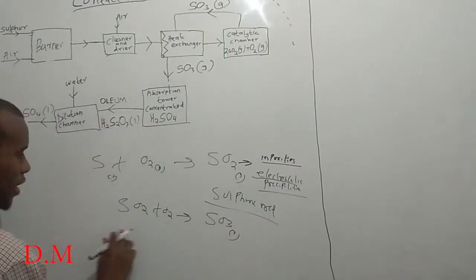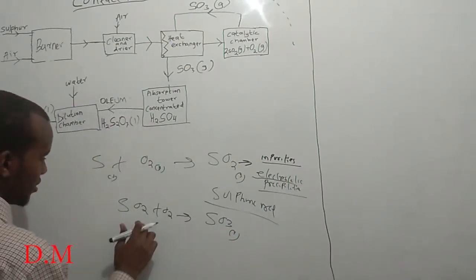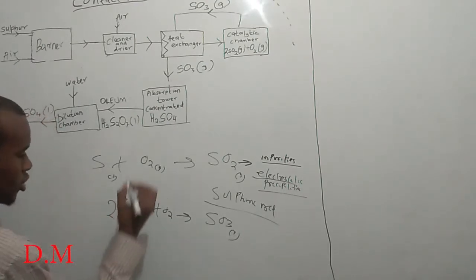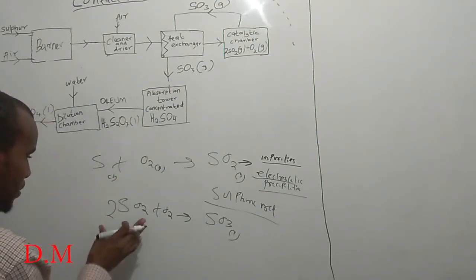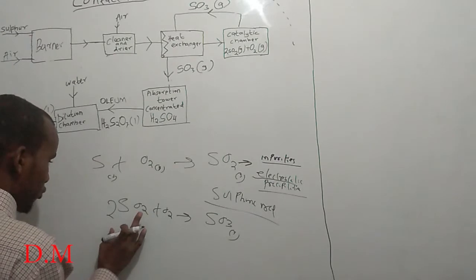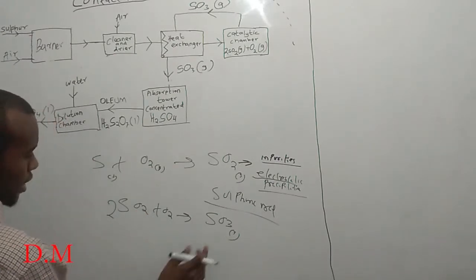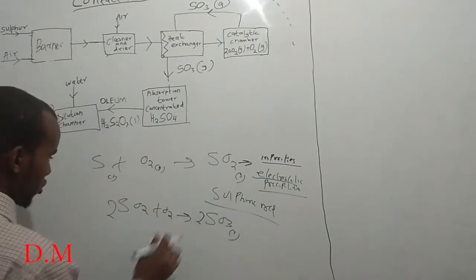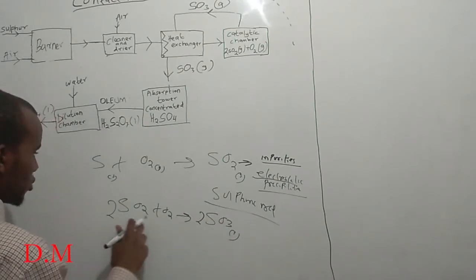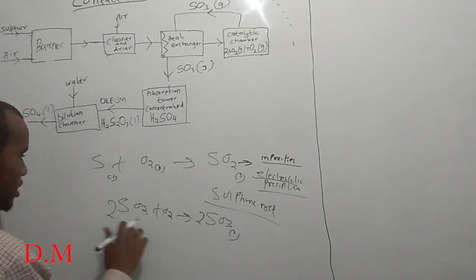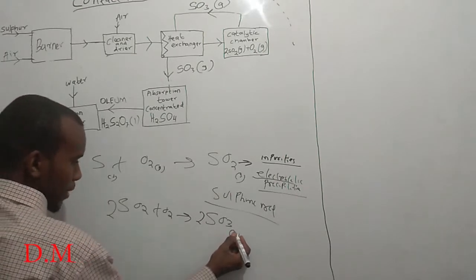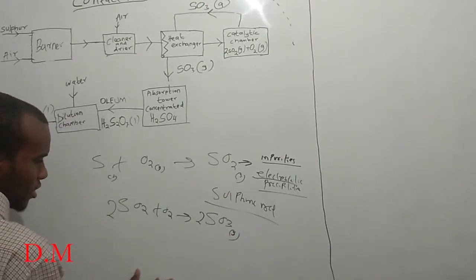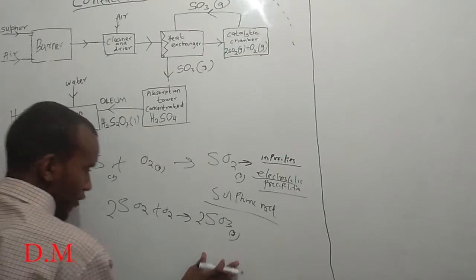Balancing the equation: sulfur dioxide plus oxygen gives sulfur trioxide. With a coefficient of 2 on both SO2 and SO3, and one O2, we get: two sulfur, six oxygen on each side. The equation is balanced — sulfur dioxide reacts with oxygen to form sulfur trioxide.